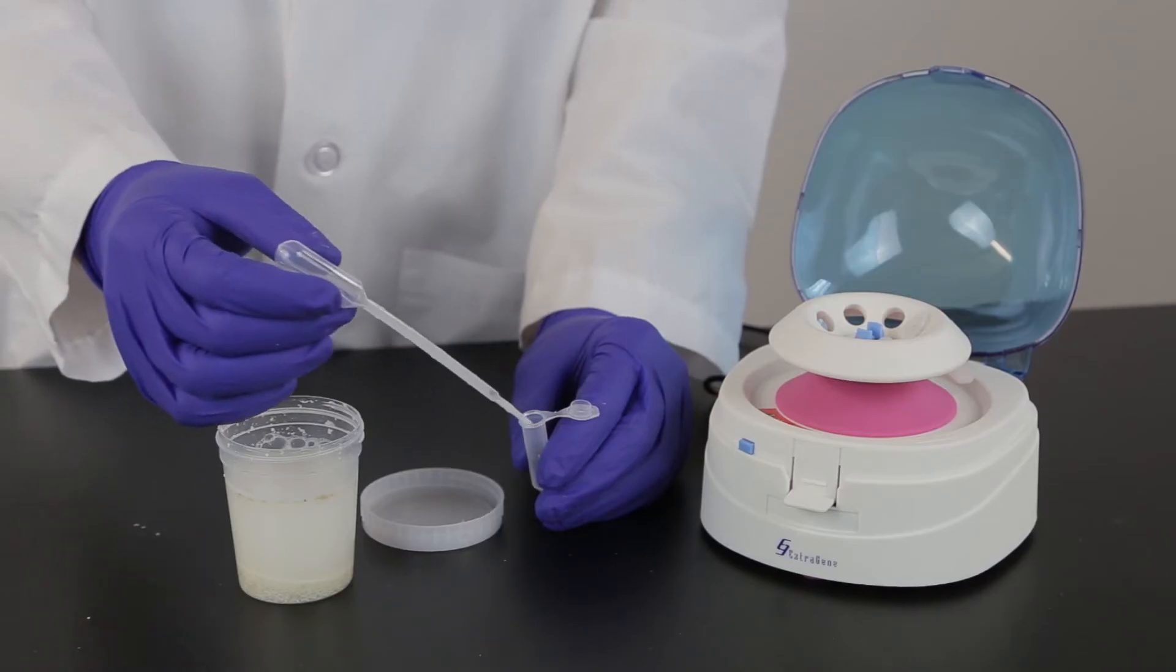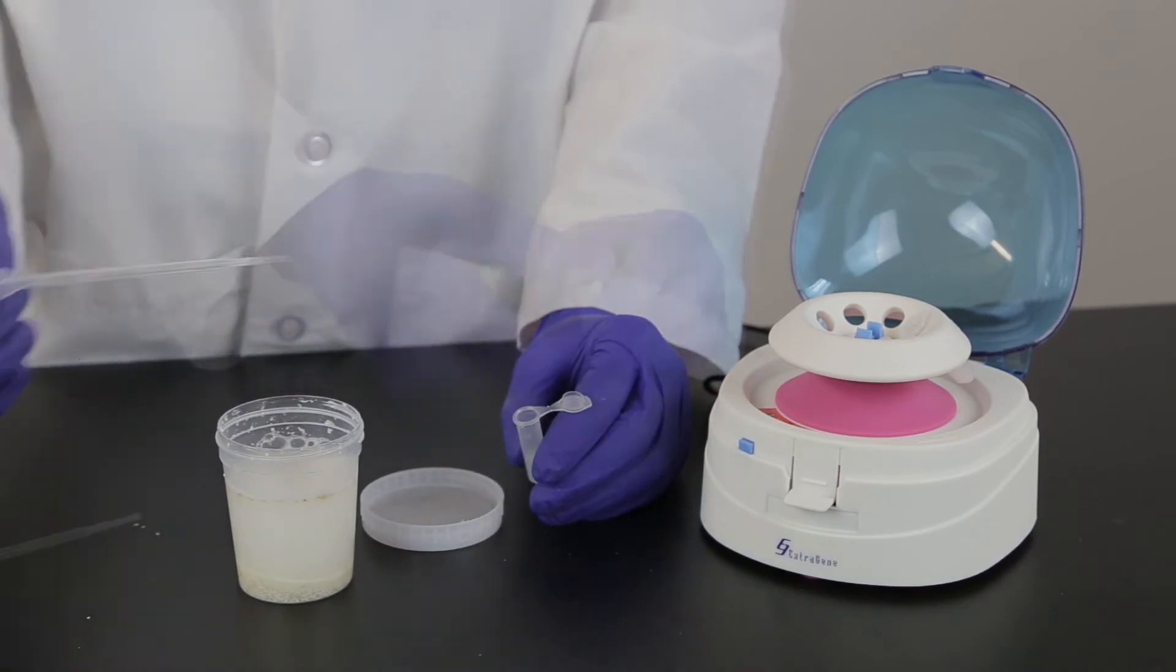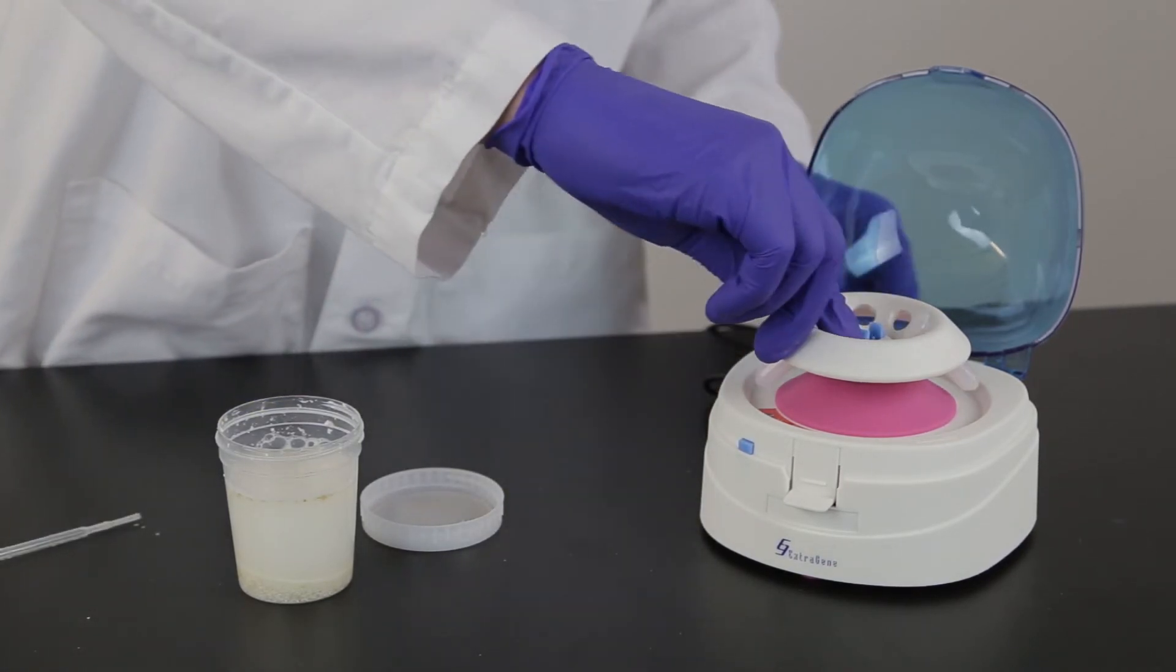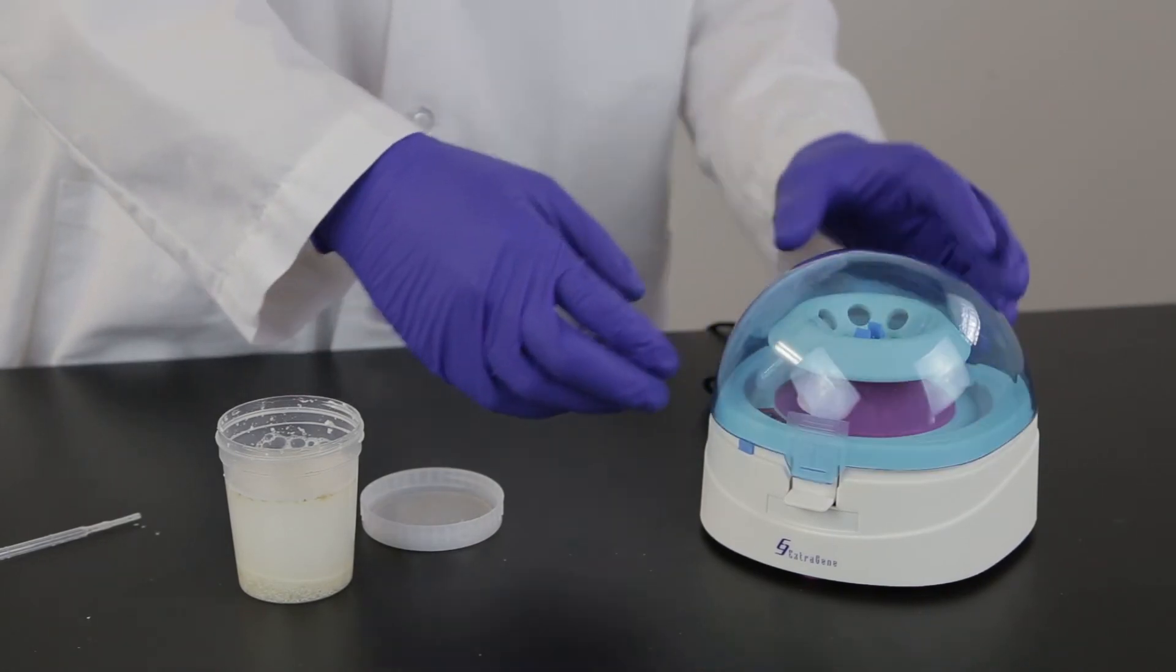You can also pipette one milliliter of sample into a 1.5 milliliter microcentrifuge tube and centrifuge for one minute.